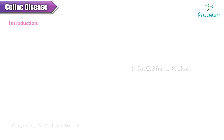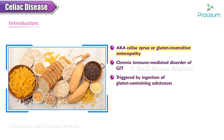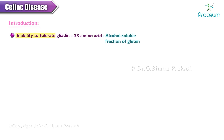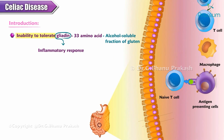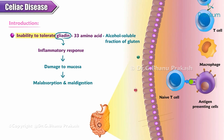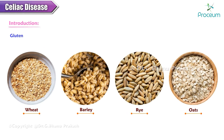Celiac disease, also known as celiac sprue or gluten-insensitive enteropathy, is a chronic immune-mediated disorder of the digestive tract triggered by ingestion of gluten-containing substances. There is an inability to tolerate gliadin, a 33 amino acid alcohol-soluble fraction of gluten. Once gliadin is ingested, an immunologically mediated inflammatory response is generated in genetically predisposed populations, resulting in damage to the mucosa of the small intestines, causing malabsorption and maldigestion. Gluten is commonly found in wheat, barley, rye, and oats.